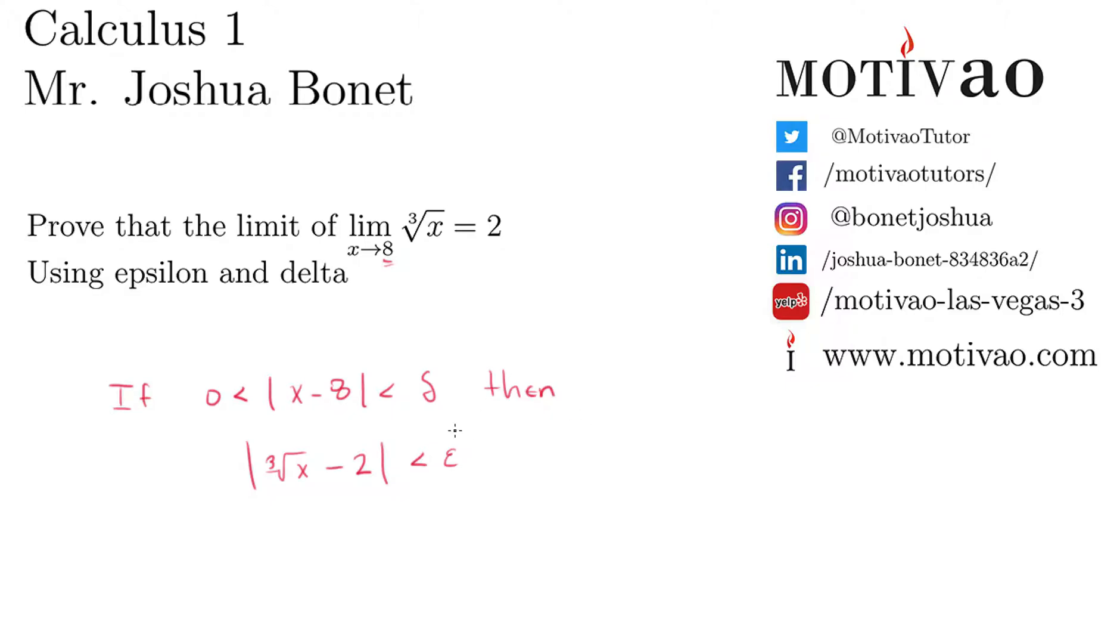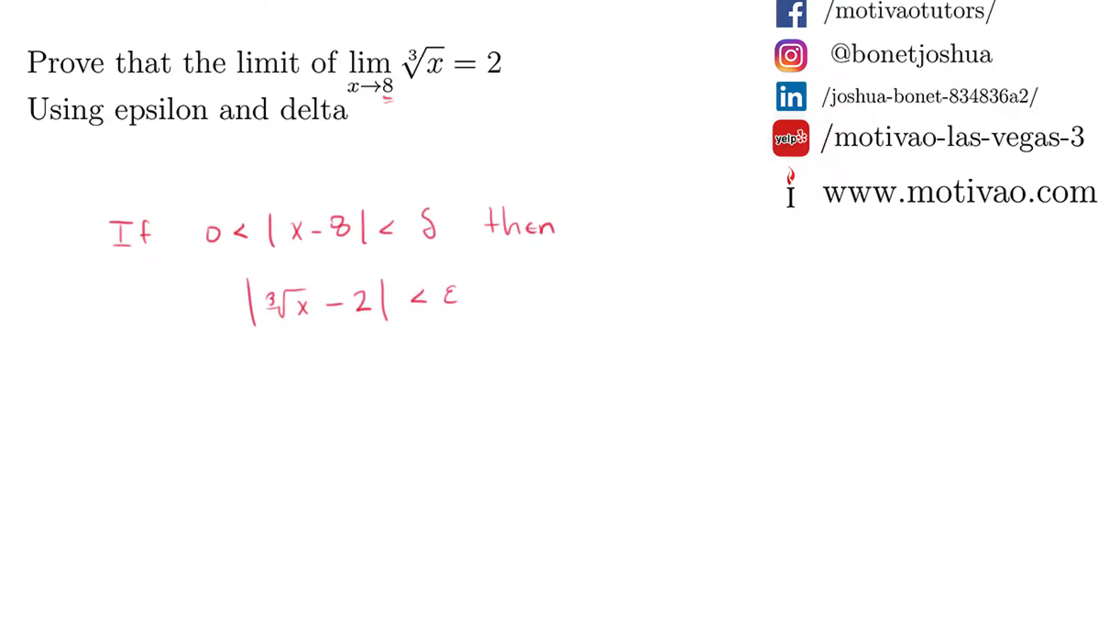Now as you've seen before, we need to use this last statement to find delta. So if absolute value of cube root of x minus 2 is less than epsilon, well that means by theorem that this is minus epsilon less than cube root of x minus 2 less than epsilon.